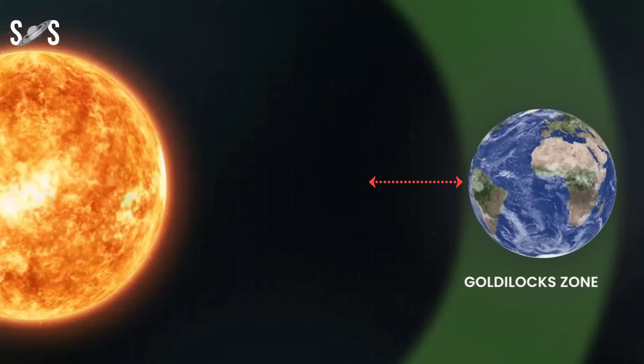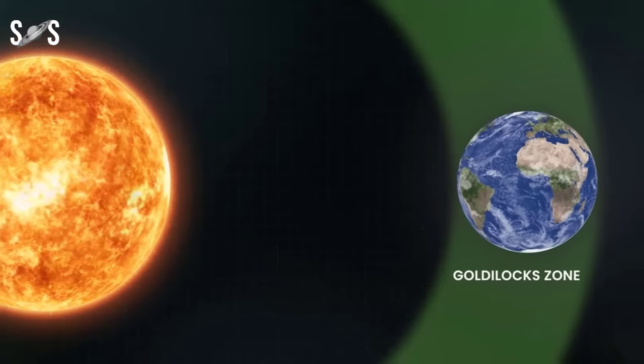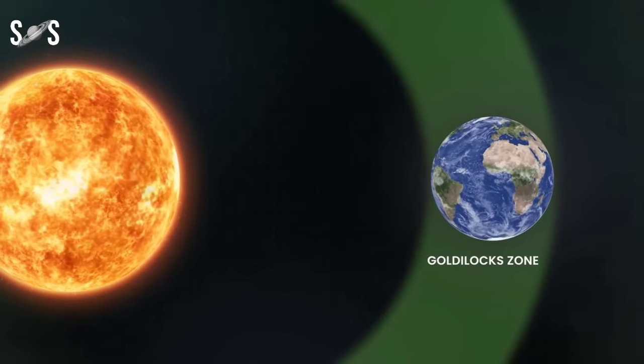The Earth's distance from the Sun is about 150 million kilometers. That's the Goldilocks Zone of our solar system.